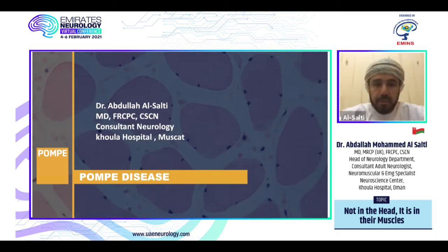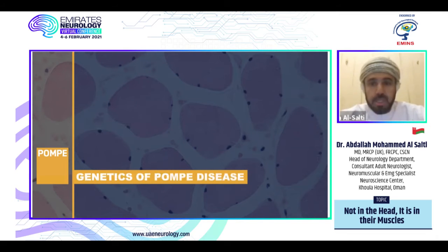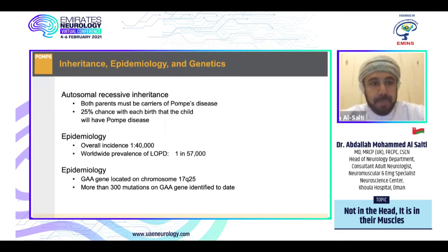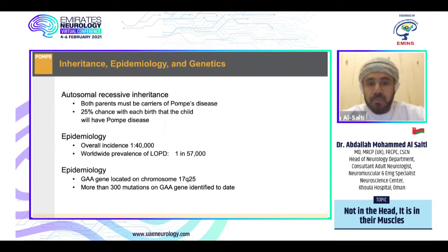We'll start with genetic testing, genetics, and inheritance. Pompe disease is inherited as an autosomal recessive condition — both parents must be carriers. There is a 25% chance with each birth that the child will have Pompe disease. The overall incidence is around one in 40,000 worldwide, with a prevalence of one in 57,000.